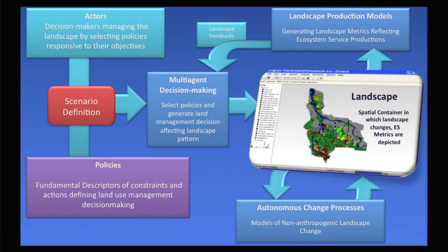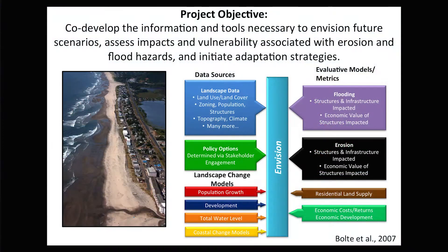We're modeling the physical and social factors in a computing environment called Envision. You can think of Envision as basically a dynamic GIS. We can actually allocate where people live and where the infrastructure is on the landscape within the model, and then incorporate our models of coastal hazards to predict erosion and flooding now and what that might look like into the future.